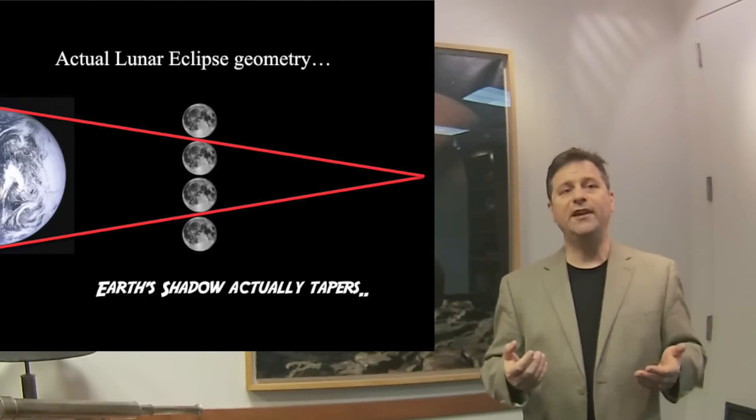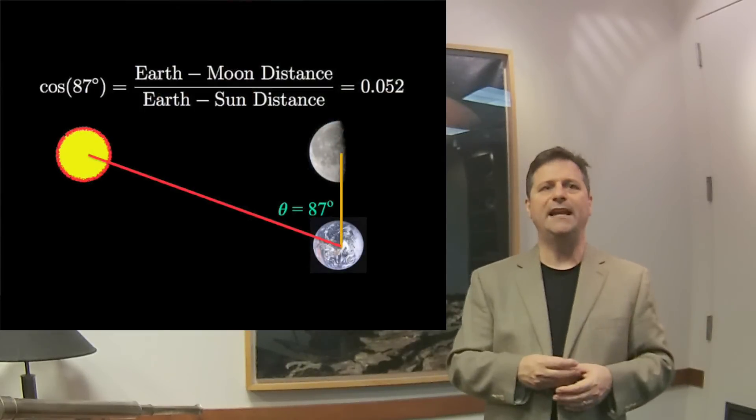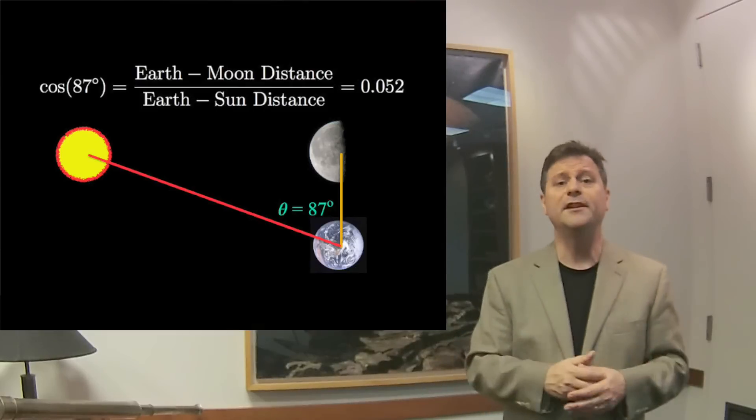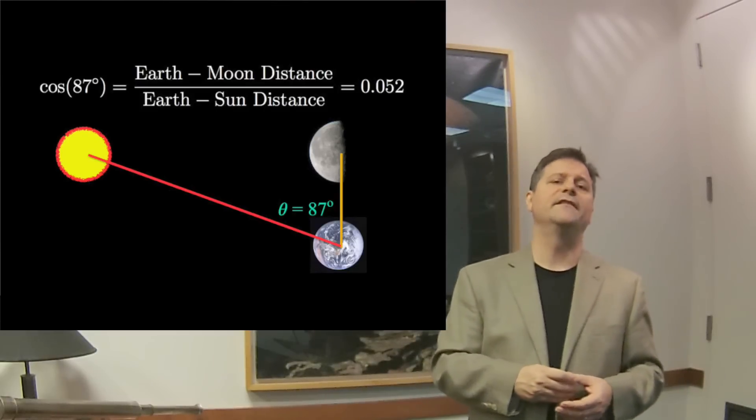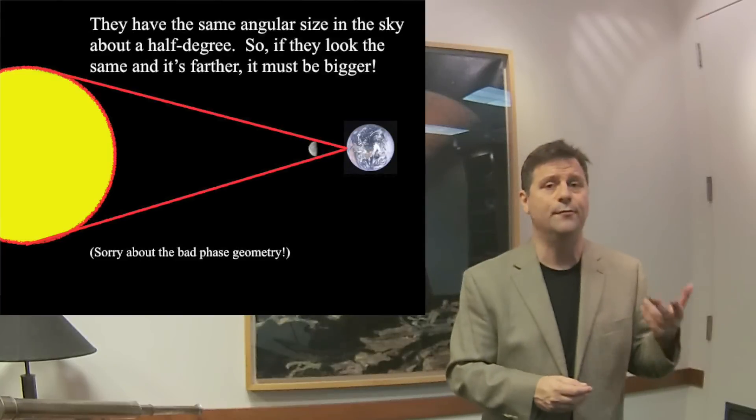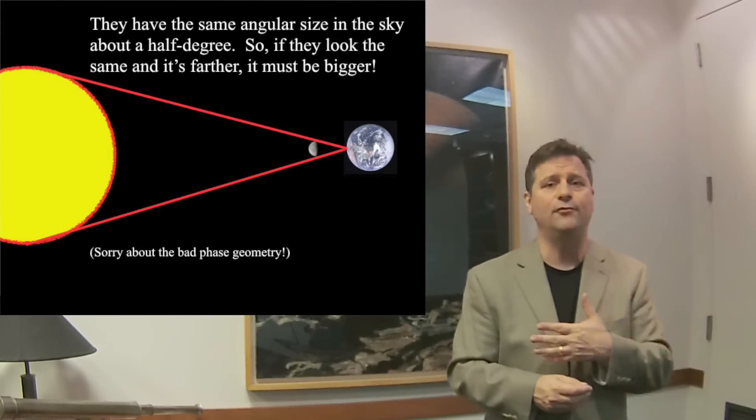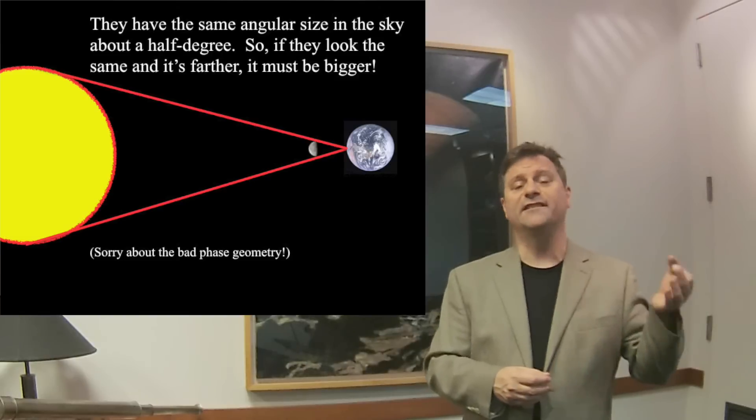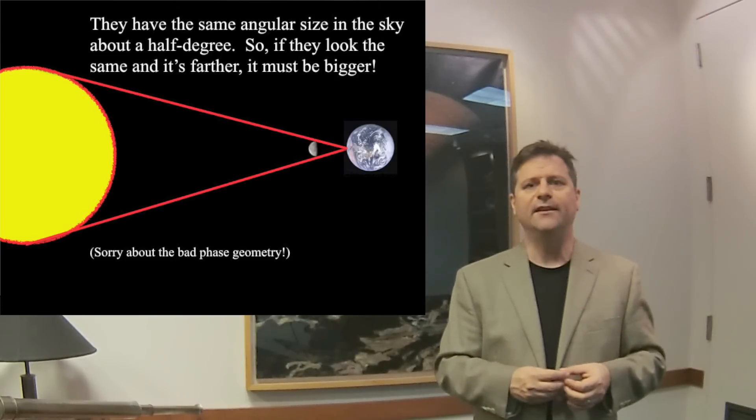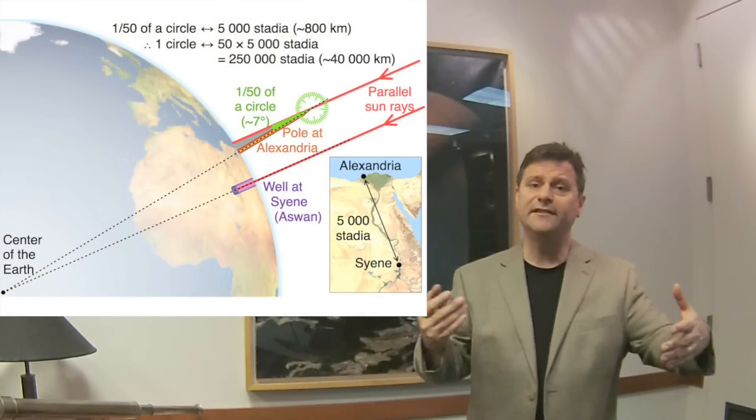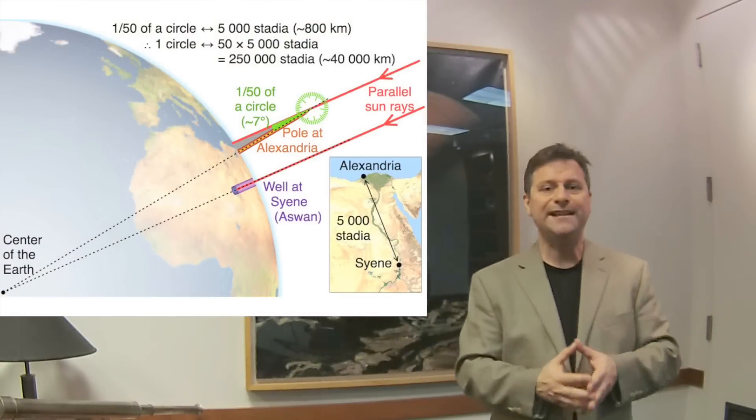So what Aristarchus did is he used angles between the moon and the sun and he determined they were the same angular size. So he determined that the sun was much further than the moon. He also determined the size of the sun based upon the size that he thought the moon was based on how long it took to go through a lunar eclipse. And you could even use Aristarchus's description of the size of the earth in order to get the relative sizes of all of them.